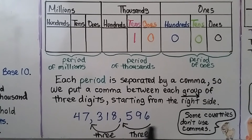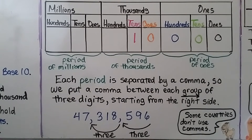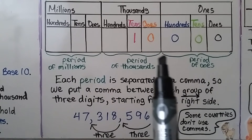Starting from the right side, we count the digits: one, two, three, put a comma; one, two, three, put a comma. And we could keep doing it going into the billions and trillions. Now, some countries don't use commas, but here in the USA we use commas. So between each period is a comma.